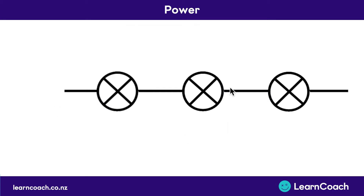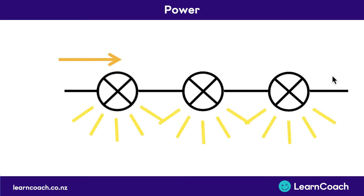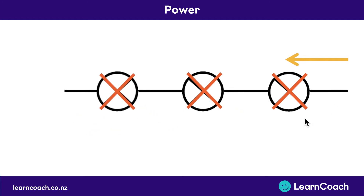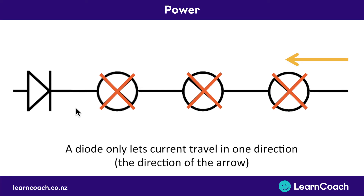Now let's look at another concept. Here we've got three bulbs in series. If the current is flowing from left to right, you have the lights glowing. But if we were to make the current go in the opposite direction, the bulb can't work — it may even break the bulb completely because of the way they're made. Therefore, we can put in a component that means the current only goes in one direction, flowing from left to right. This component is called a diode. A diode only lets current travel in one direction, which is the direction of the big arrow. It's represented as a block arrow with a line in front of it, and with the diode in, the current would only flow from left to right.